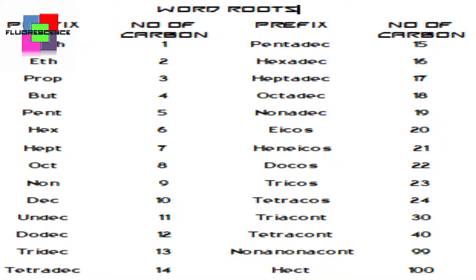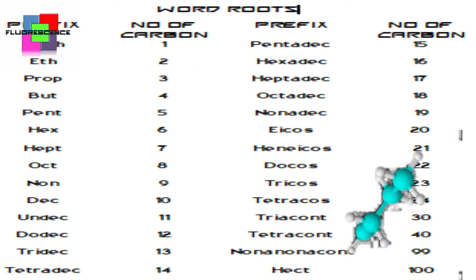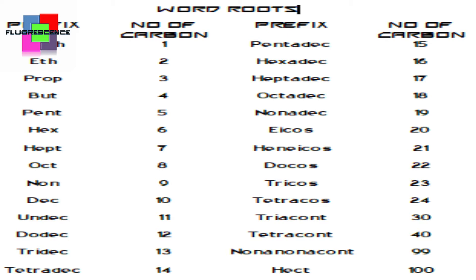If we have one carbon atom it's methane, two carbon atoms it's ethane, three carbon atoms propane, four butane, five pent, six hex, seven hept, eight oct, nine non. For larger numbers: 20 is 'icosa' (spelled i-c-o-s), 21 is 'henicosa', 22 is 'docosa'.